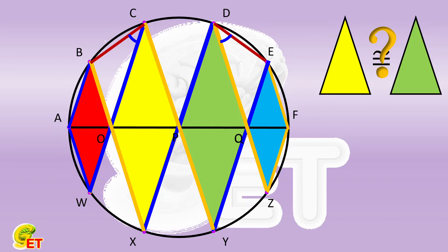These two arcs are twice the arcs AB and twice the arcs FE, so they are also equal to each other. So the angle BCW is equal to the angle EDZ.